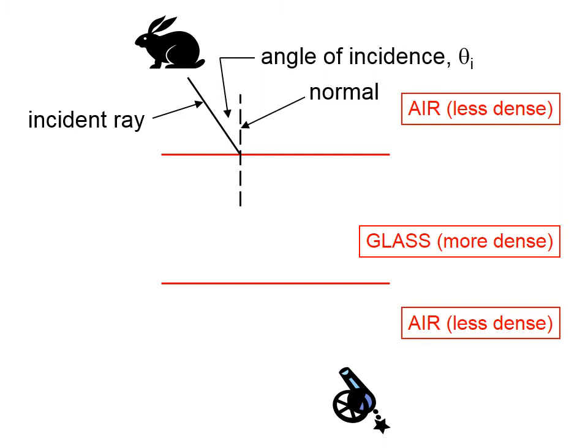There's the normal to the boundary. The angle of incidence is measured relative to the normal, not the surface. When light goes from a less dense medium to a more dense medium, it's going to bend toward the normal. You can see that the refracted ray has an angle of refraction that is smaller than the angle of incidence. So this light ray has bent towards the normal.